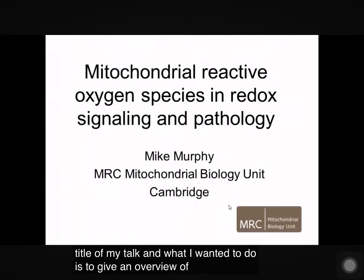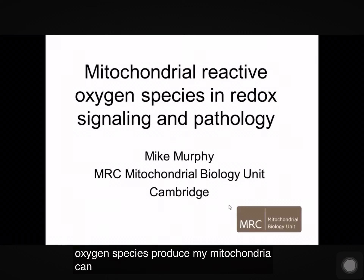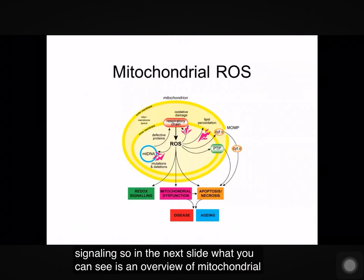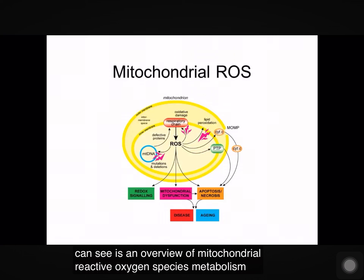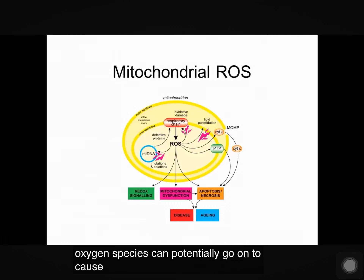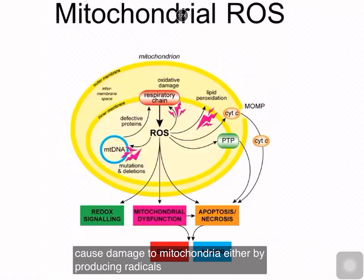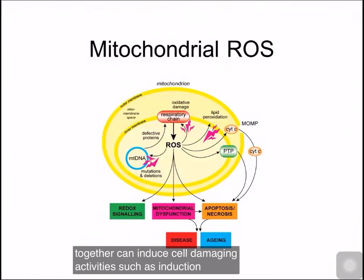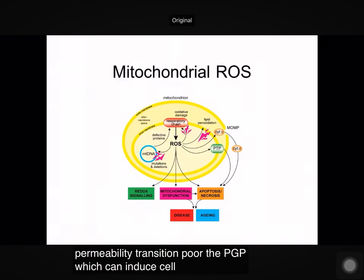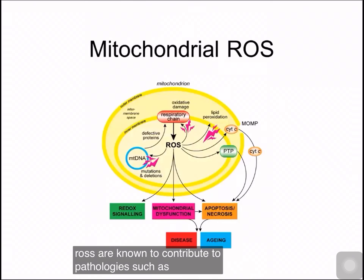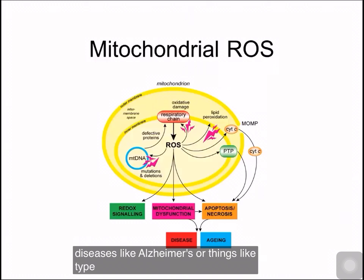I want to give an overview of how reactive oxygen species produced by mitochondria can contribute to pathology and to redox signaling. The respiratory chain produces reactive oxygen species, which can potentially cause damage to mitochondria by producing radicals that damage the lipids, DNA, or protein. These together can induce cell-damaging activities such as induction of the permeability transition pore, the PTP, which can induce cell death. All of these aspects of mitochondrial ROS are known to contribute to pathologies such as ischemic reperfusion injury and heart attack, or chronic disorders such as neurodegenerative diseases like Alzheimer's, or things like type 2 diabetes.